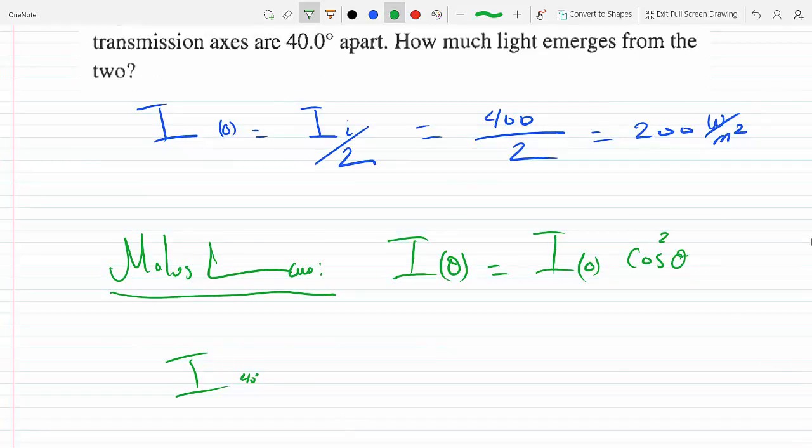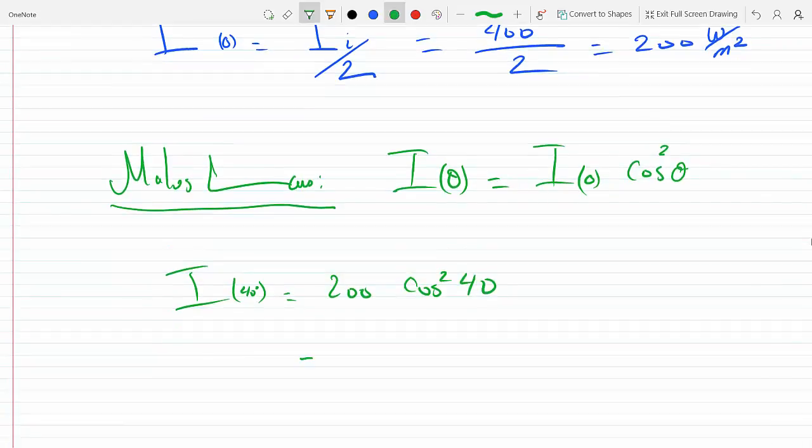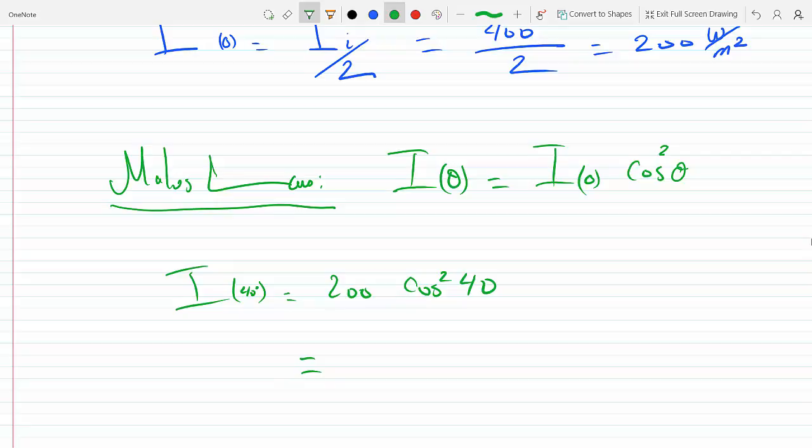This will be at 40 degrees equal to 200 cosine squared 40, which equals 117.4 watts per meter squared. So this would be the irradiance of the light emerging from the two ideal polarizers. That does it.